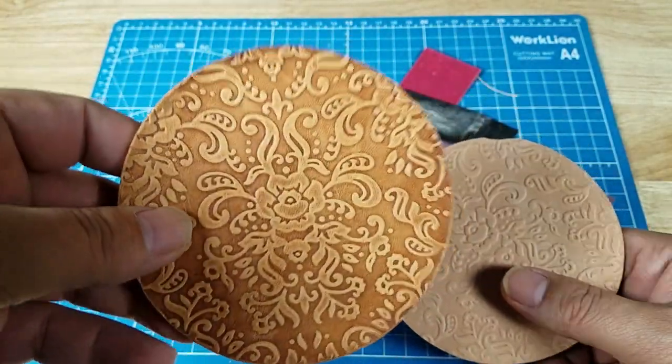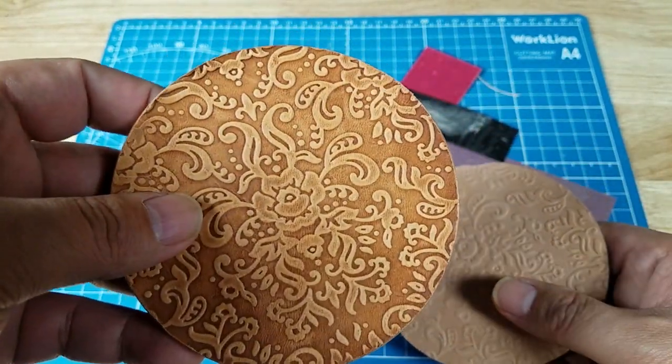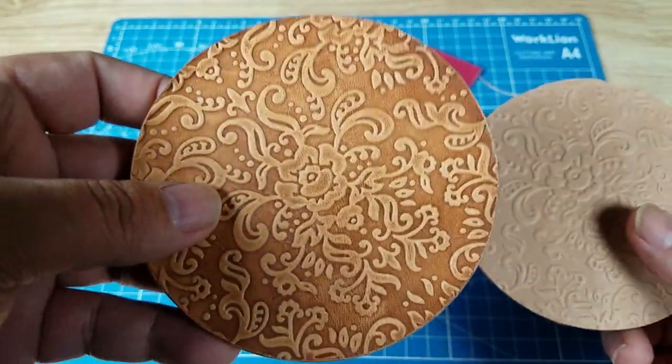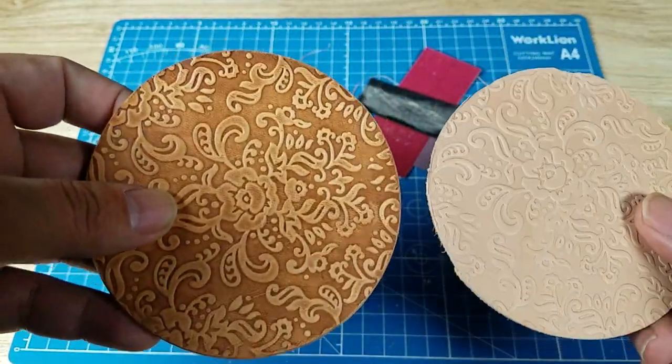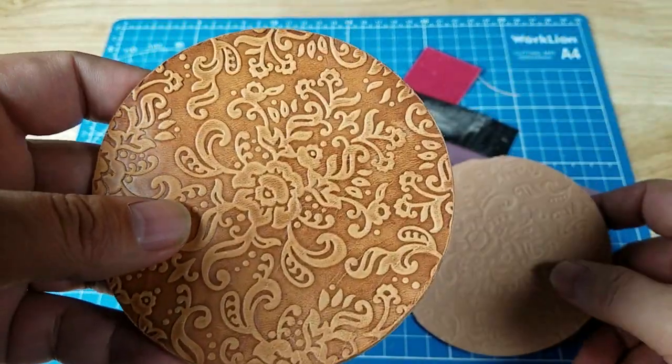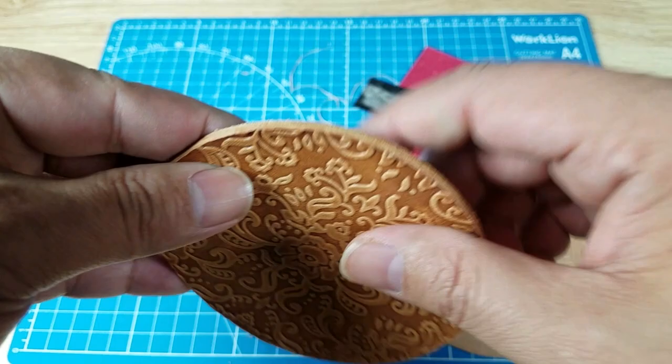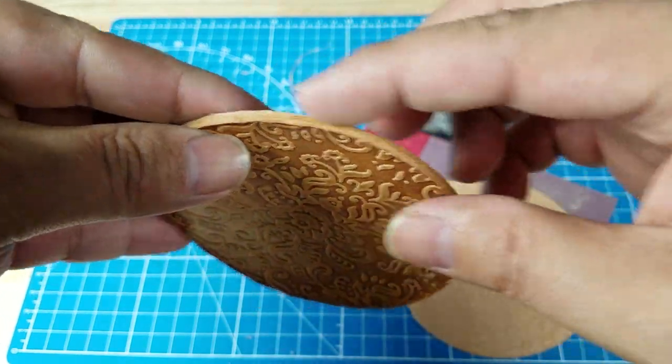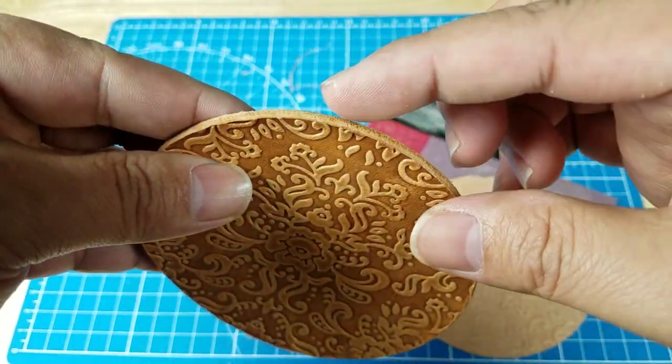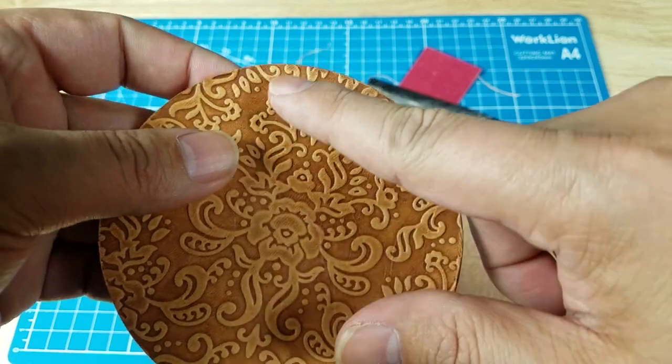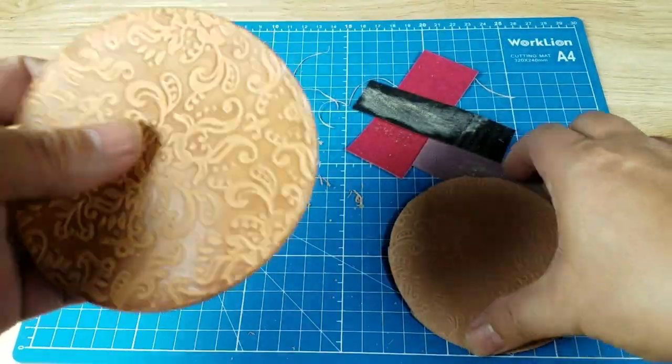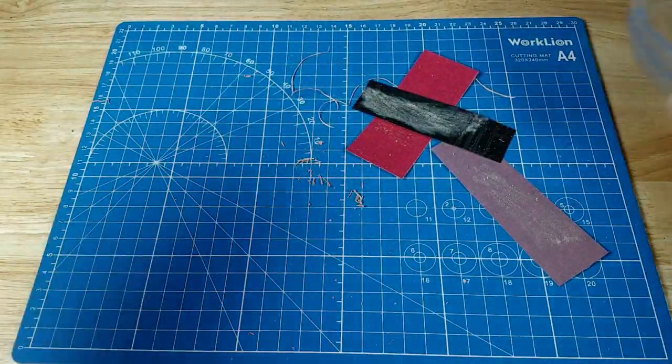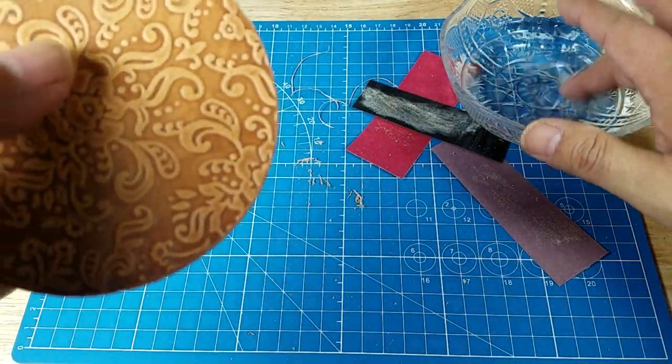Neatsfoot oil has been the best performer compared to leather balm. The order I'm doing this in doesn't really matter. I prefer to take care of the face first and then do burnishing on the edges because I don't want to get any product from the edges onto the face causing splotching.